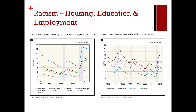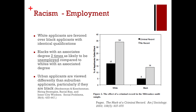This is true at every level of education. The rate of unemployment tends to be higher for those with less than a high school degree, but it also tracks with race all the way up the line — Black workers having the highest rate of unemployment, followed by Hispanic, and then white and Asian tend to be fairly similar.